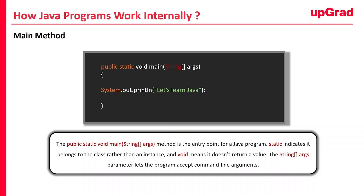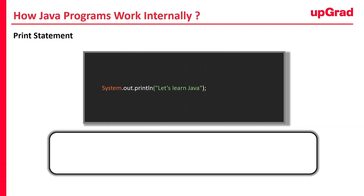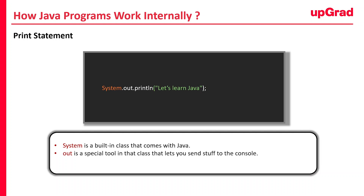With the main method ready to go, the next step is to actually do something — like printing a message to the console. Inside the main method, we have this line: System.out.println("Let's learn Java"). You can write anything you want; all this does is print that message to the console — the black screen where you see outputs. System is a built-in class that comes with Java. Out is a special object in that class that lets you send output to the console. println is a method of the PrintStream class that prints what you tell it to, and it adds a new line at the end so each message starts on its own line.